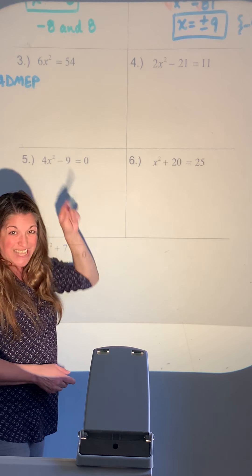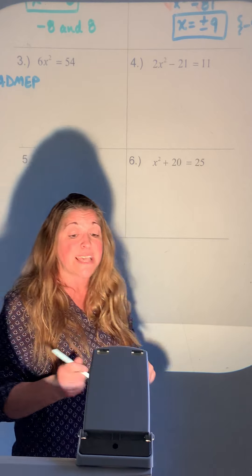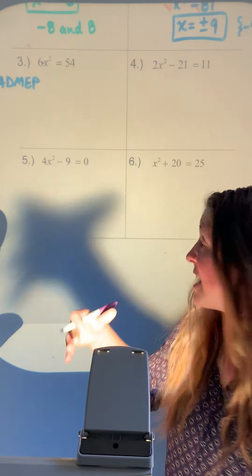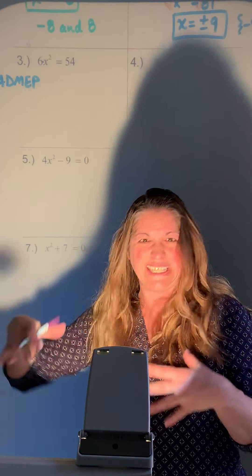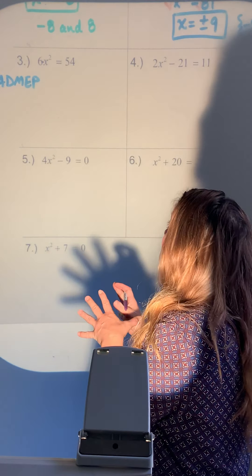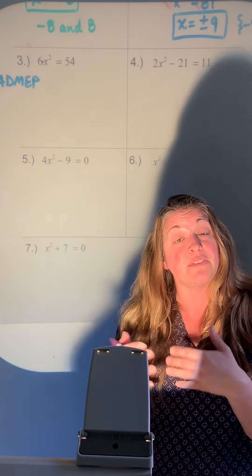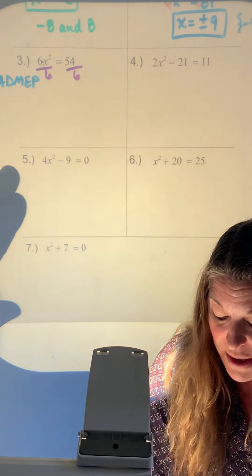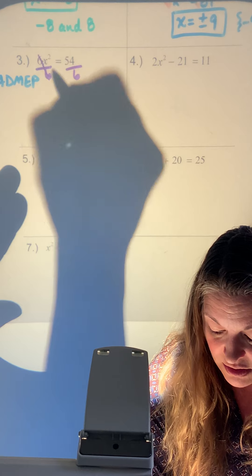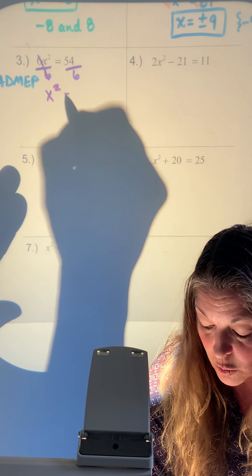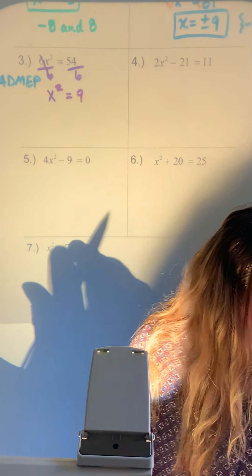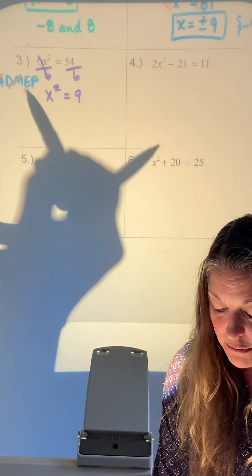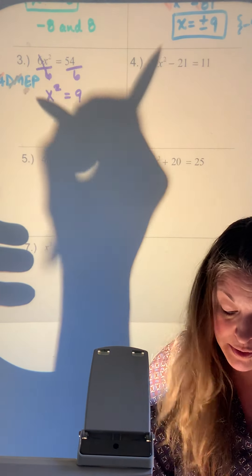There's nothing being added or subtracted to x squared. The only thing is the 6, which is actually being multiplied — it's a coefficient; it's not being squared, just the x is. To get rid of a coefficient of 6, divide by 6. That gives x squared equals 9.